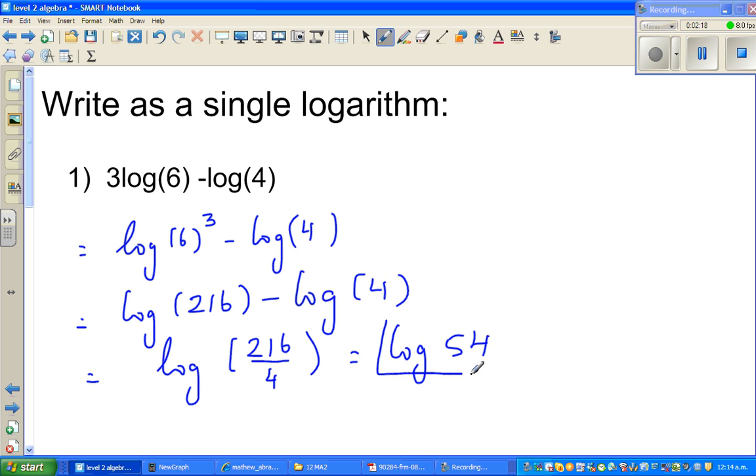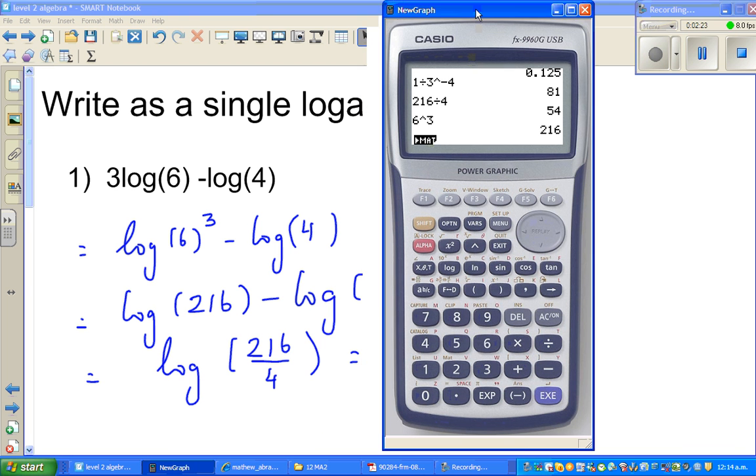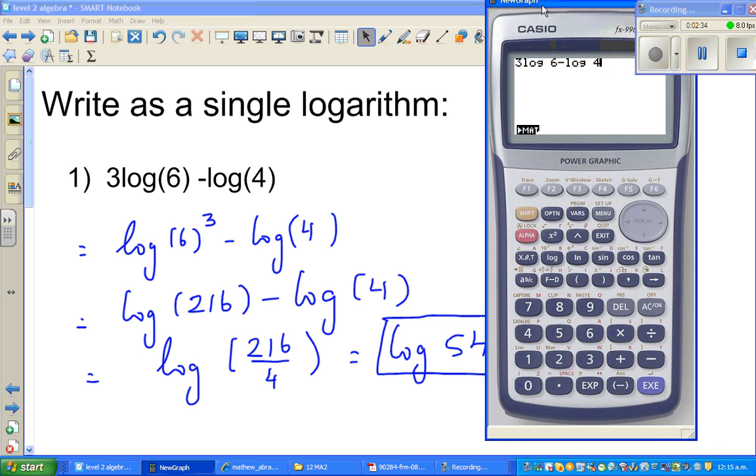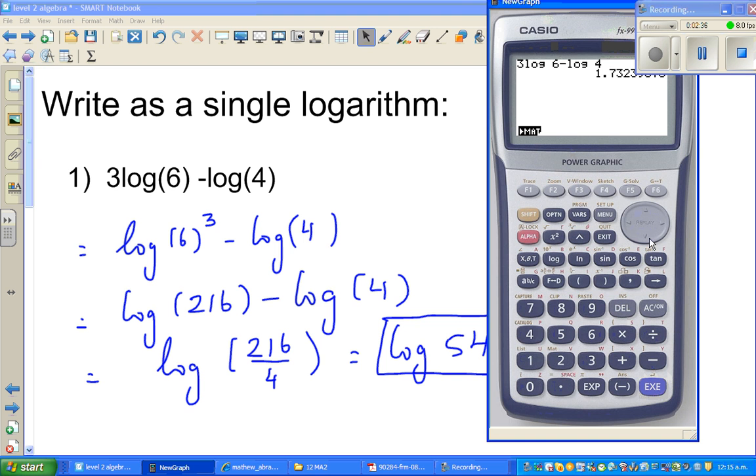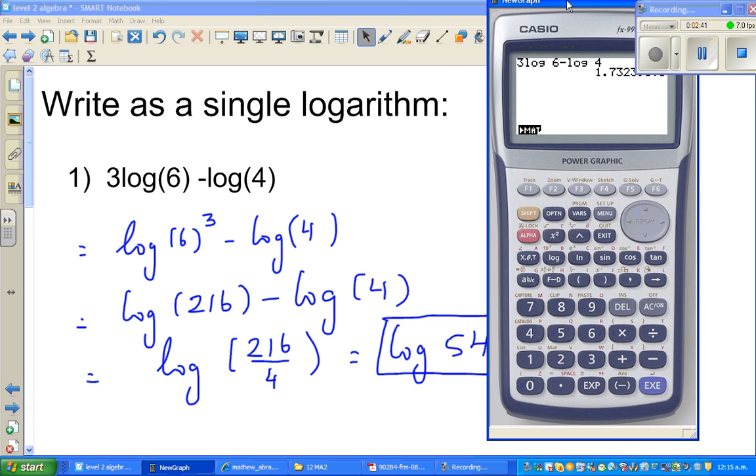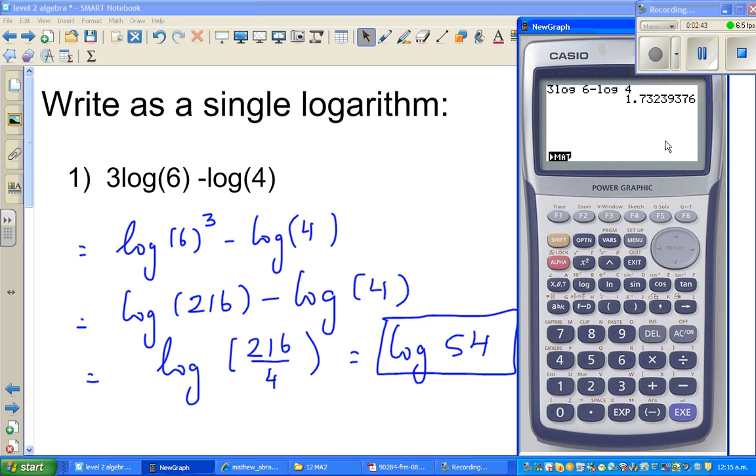Now, how can you check your answer? Again, on the calculator. So, you can type in 3 log 6 minus log 4. It will be a number. Let me show it here. Execute, that is 1 point 7 3 2 3, whatever. And then if you press log 54, it should be the same answer. That is the same. So, your answer is right.